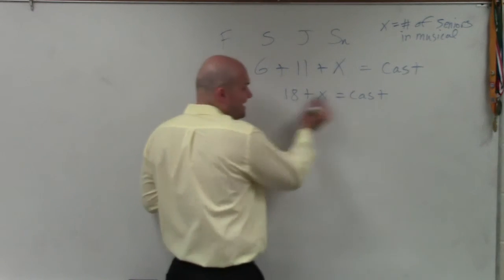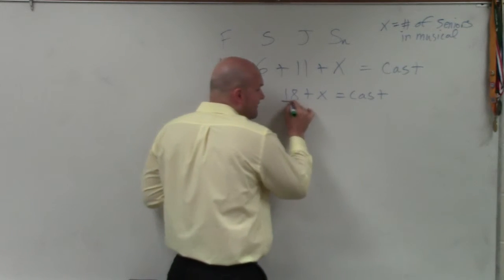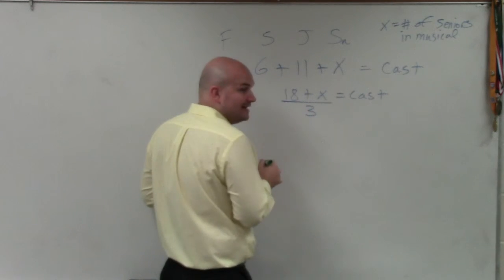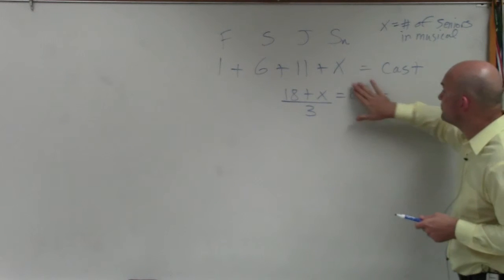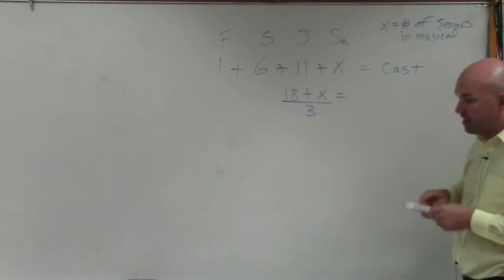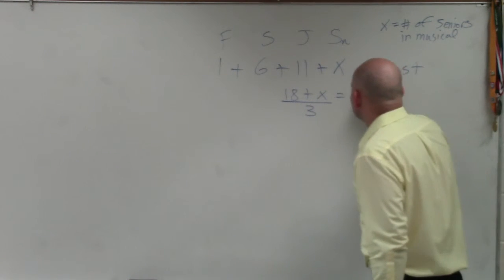So basically, if I take the full cast, if I divide the cast by 3, that equals the cast divided by 3, which is equivalent to the number of seniors.